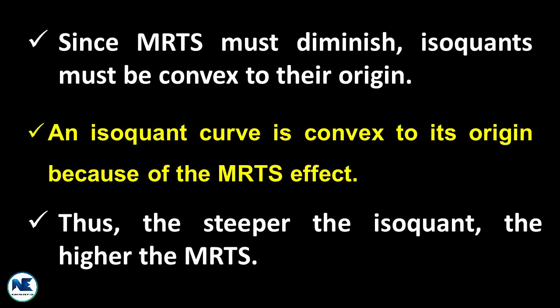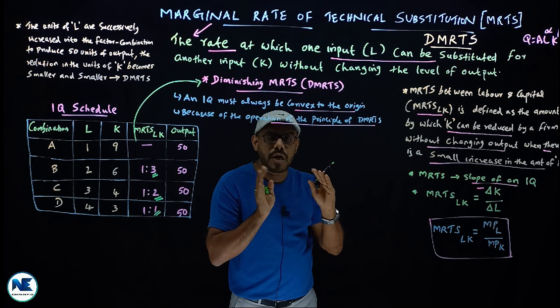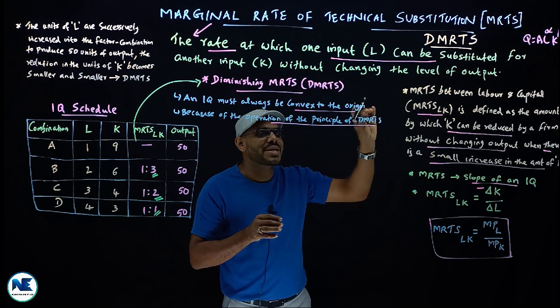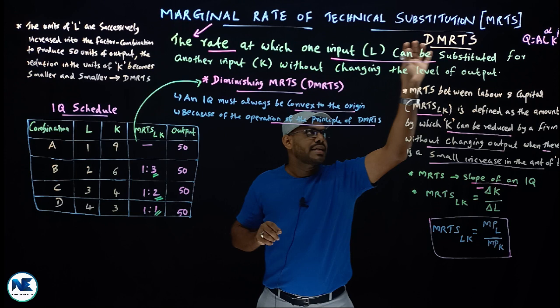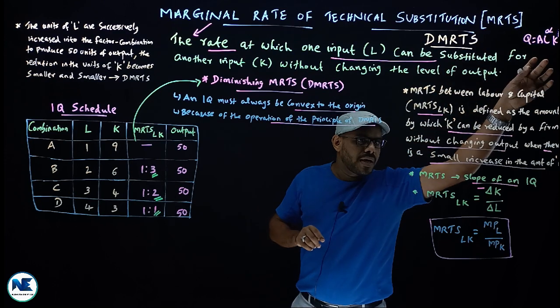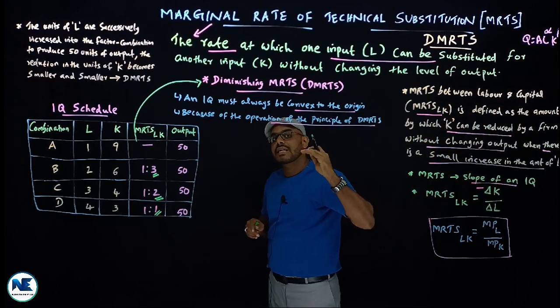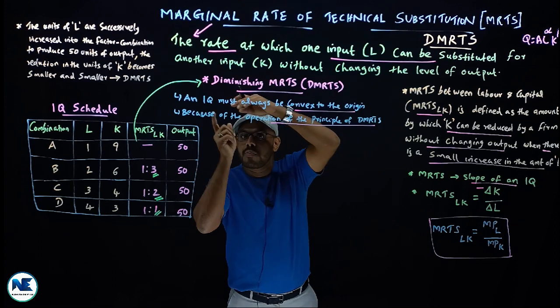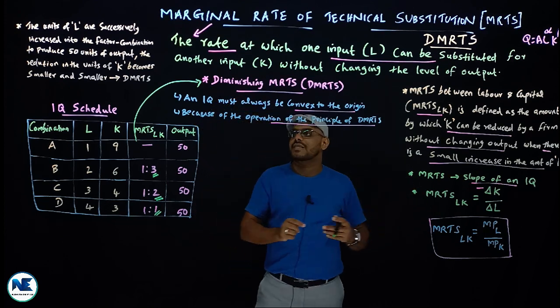There is sometimes confusion between MRS — marginal rate of substitution in indifference curves — and MRTS — marginal rate of technical substitution in isoquants. The slope of an indifference curve gives diminishing MRS, while the slope of an isoquant gives diminishing MRTS. Both have a downward slope from left to right.